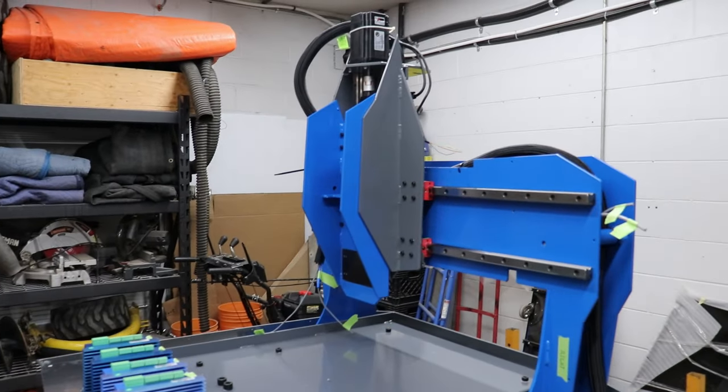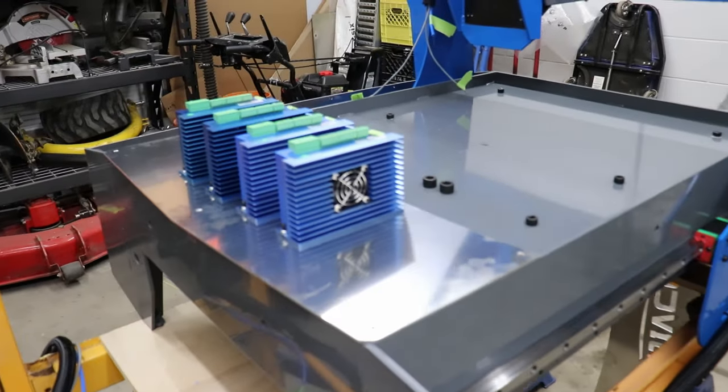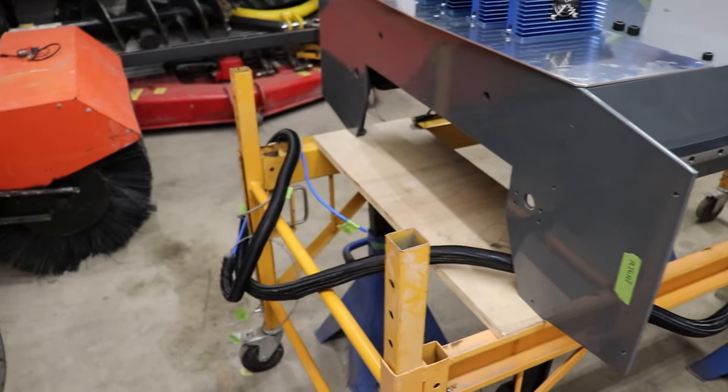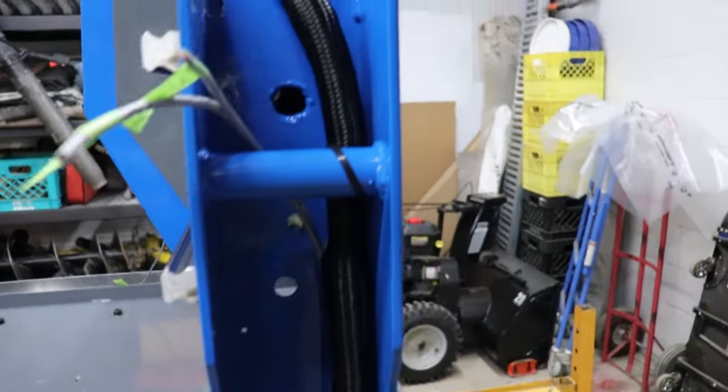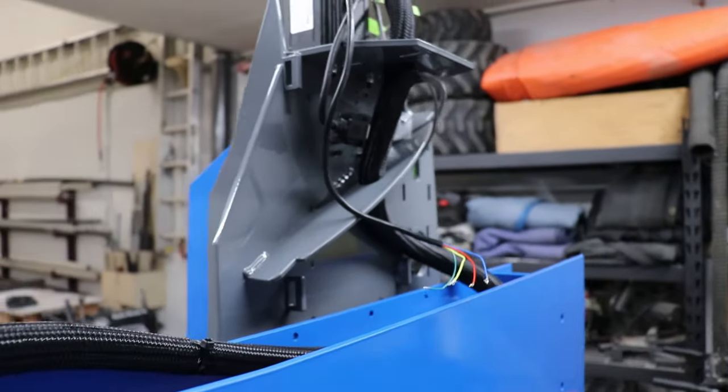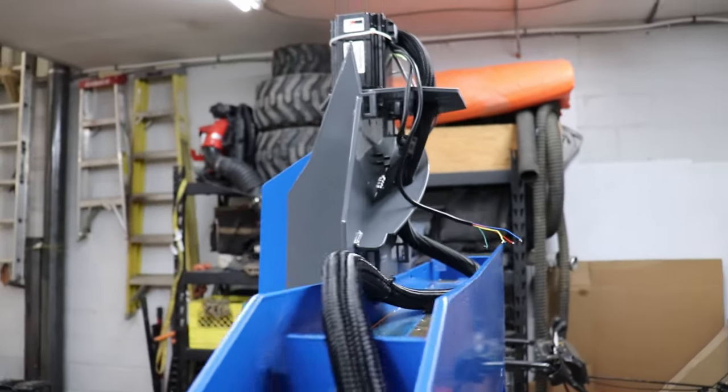Here we have most of the wiring up the gantry into the Z-axis all roughed in. I popped off the front panel here with the drivers, so I can get rough wire lengths. Everything is all bundled nicely in that braided loom all the way up to the Z-axis and through the gantry there.